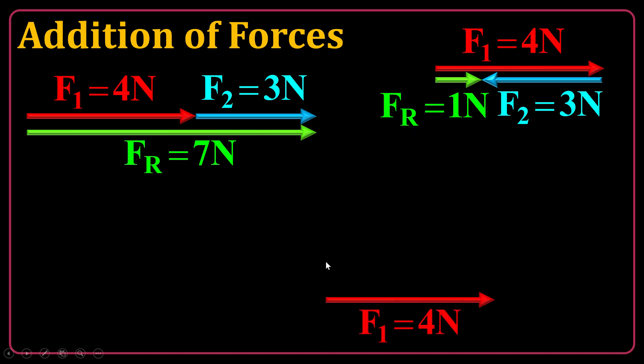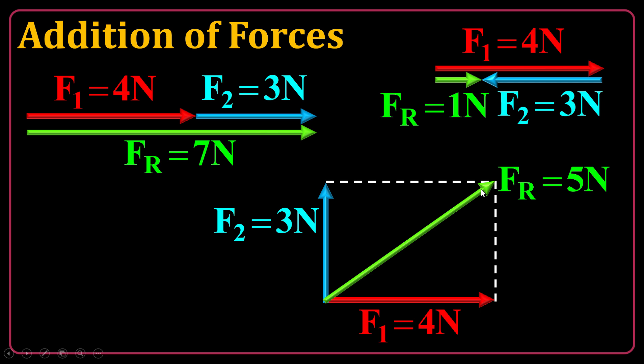Sometimes the forces are not on a line, but may be perpendicular to each other. We have four newton force horizontal, three newton force upward vertical. So in this case, you should make a rectangle and then draw a diameter of that, starting from the tail of the vector, starts from the common tail of these two. And then finally, you will end it at the other opposite corner.